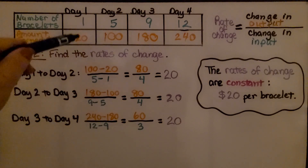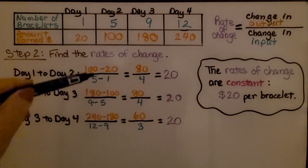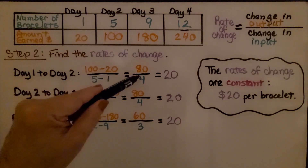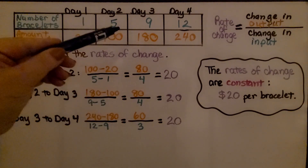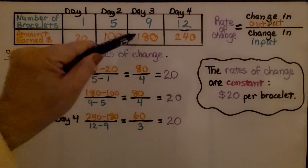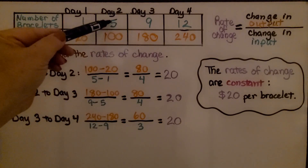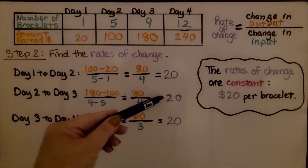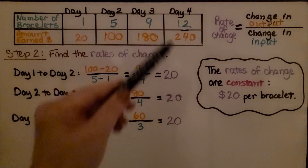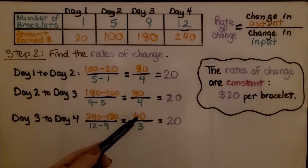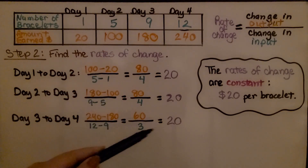The rate of change equals the change in the output over the change in the input. We put the output on top as the numerator: 100 minus 20 equals 80, divided by 5 minus 1 which is 4, giving us 20. Then 180 minus 100 is 80, divided by 9 minus 5 which is 4, again giving us 20. Then 240 minus 180 is 60, divided by 12 minus 9 which is 3, and that simplifies to 20.